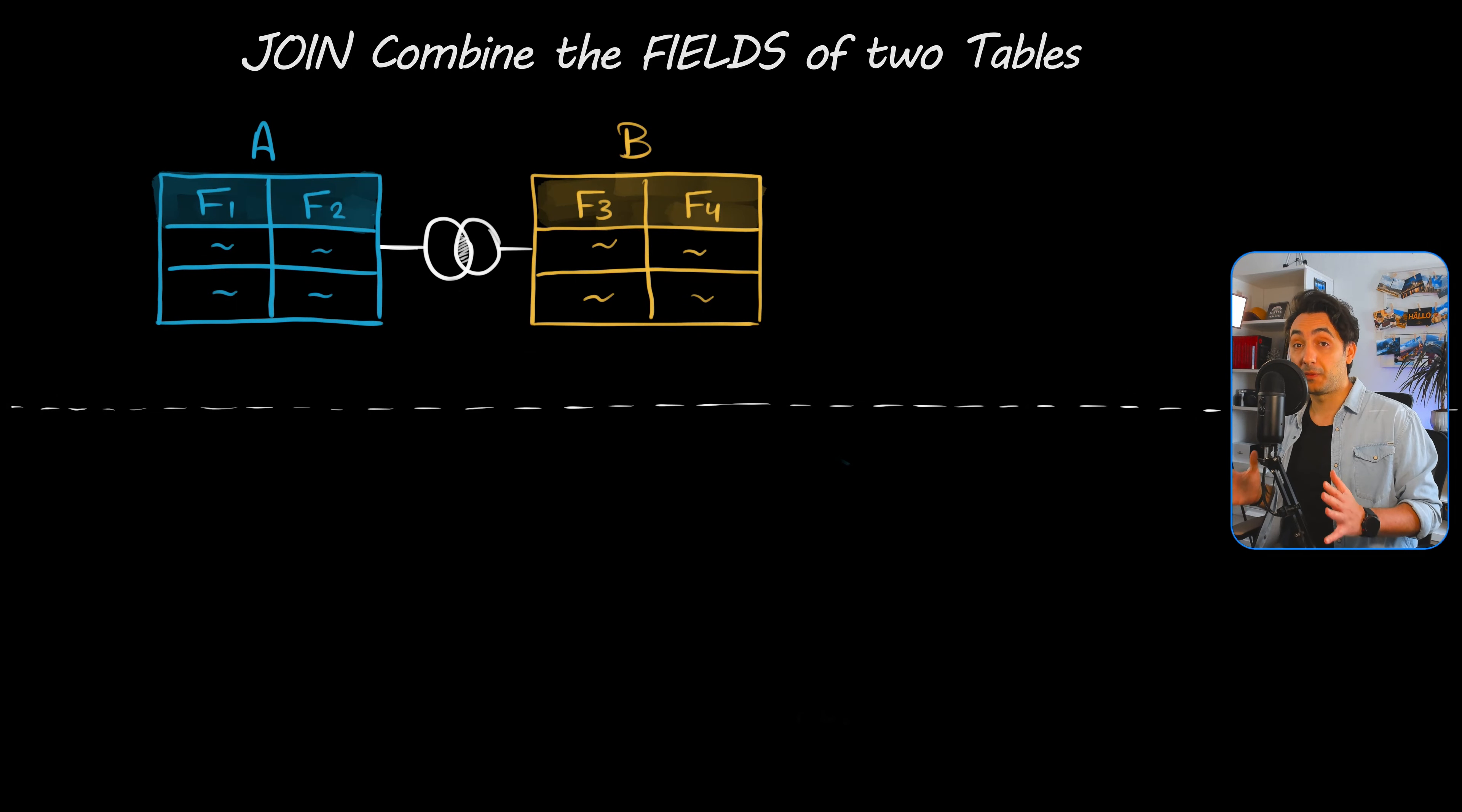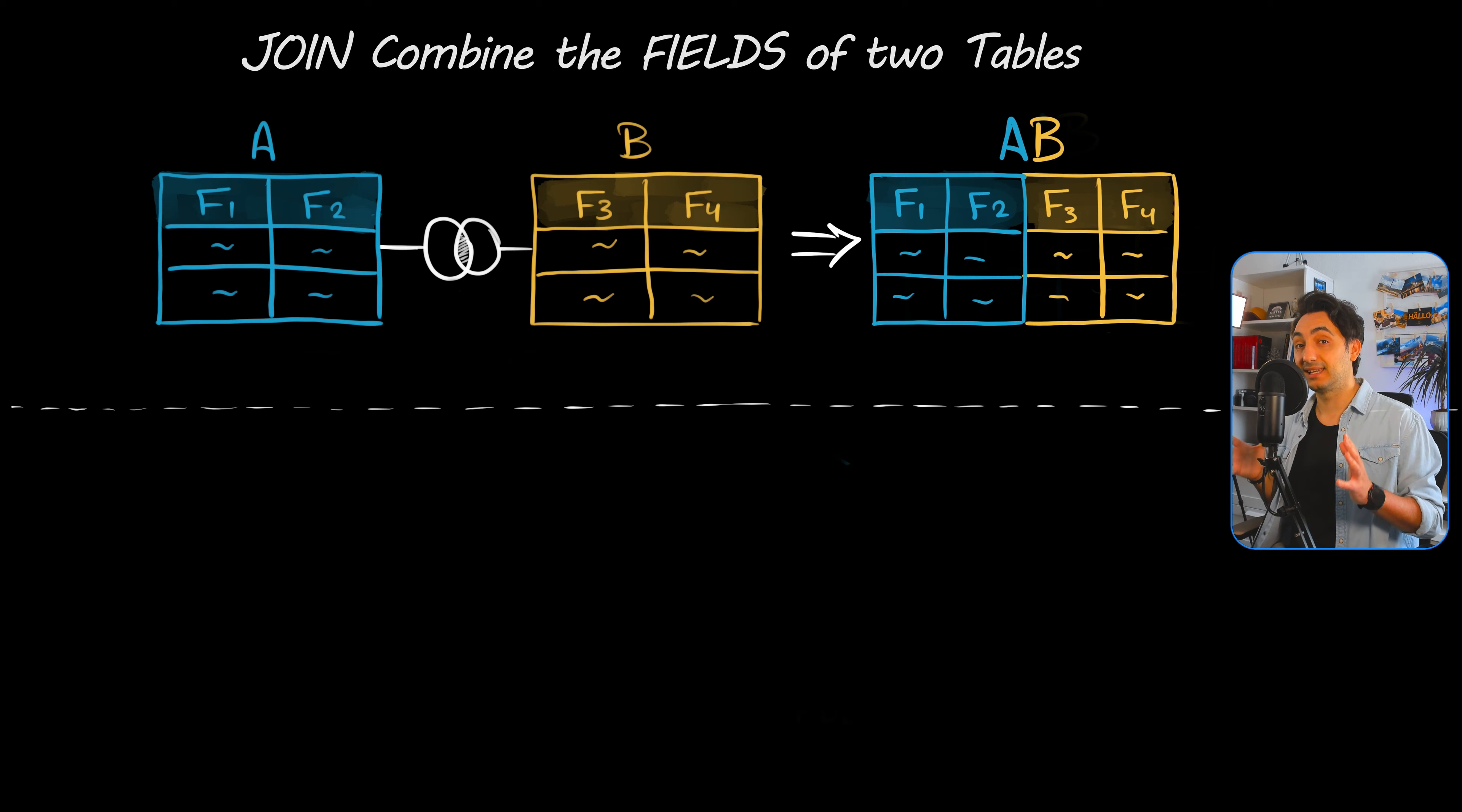In joins, the fields of both tables are going to be combined. So we're going to take all the fields from the left side and beside it all the fields from the right side. So the result we're going to get is one big wide table.